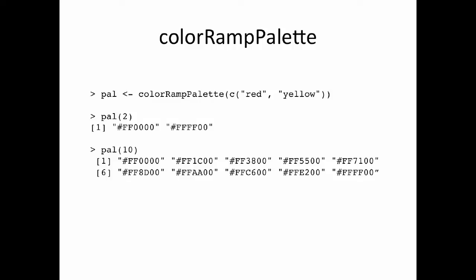The colorRampPalette function is very similar, but the type of function it returns is slightly different. Here I'm passing it a different palette with two blotches: red and yellow. We'll interpolate between those two colors. The returned function is called pal, and now pal takes integer arguments, not numbers between 0 and 1. If I give it 2, it returns two colors interpolating the palette — because the palette only has two colors, it just gives me red and yellow.